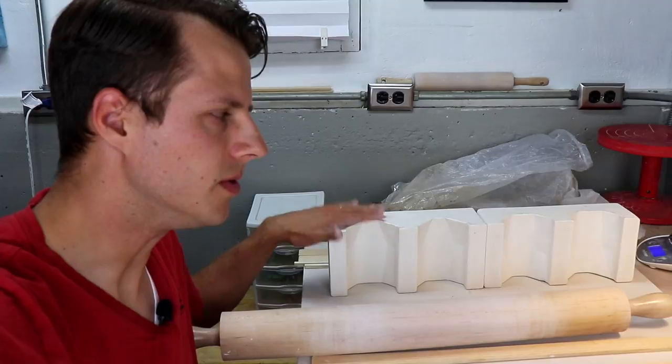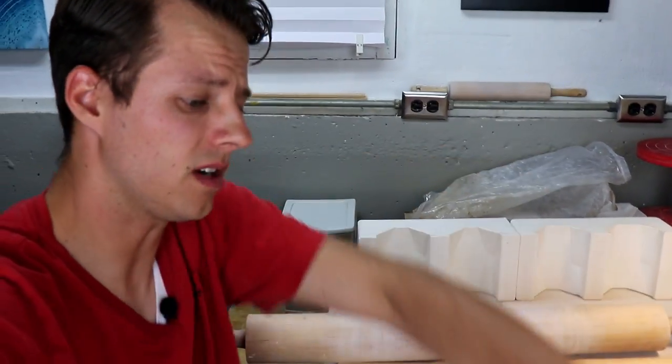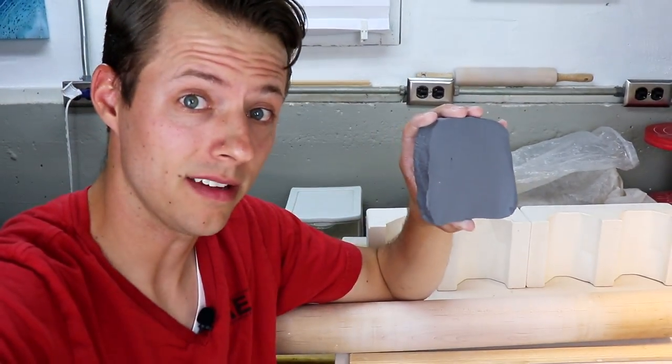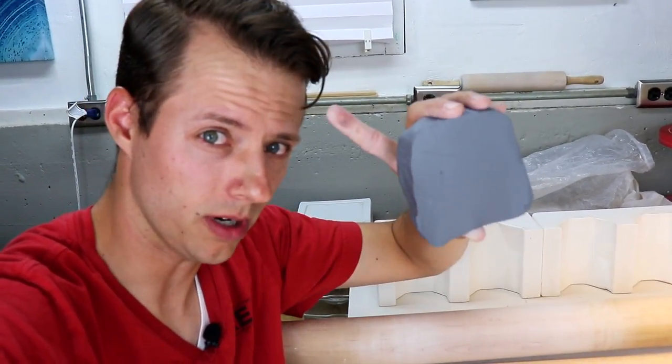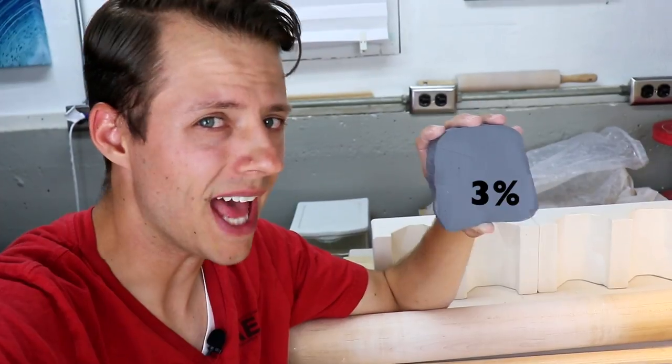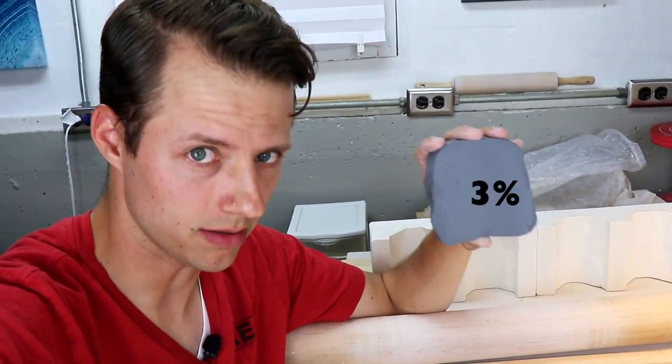Now I've already used this mold with a red clay and a blue clay for the other half, so I figured we'll use some black clay for this one. If you want to learn how to make colored clay of your own, I'll put a card up here. But this is three percent black mason stain wedged into the clay.